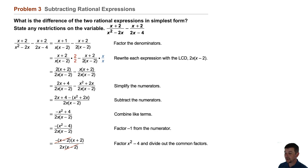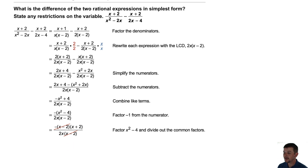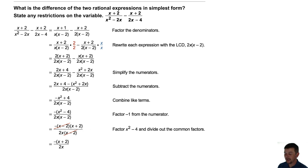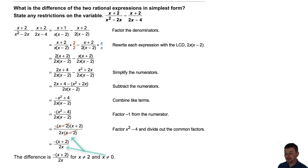We'll reduce the fraction by dividing out the common terms x minus 2 found in the numerator and denominator, and find the simplified form: the negative of x plus 2 over 2x. Don't forget to account for the restriction on the domain no longer evident in the simplified form. The difference is the negative of x plus 2 over 2x, where x does not equal 2, and also x does not equal 0, since 0 would make a zero denominator in 2x.